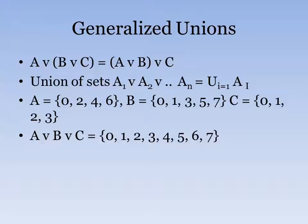So for example, we have A, which is 0, 2, 4, 6. And then set B, which is 0, 1, 3, 5, 7. And then one more set, C, which is 0, 1, 2, 3.